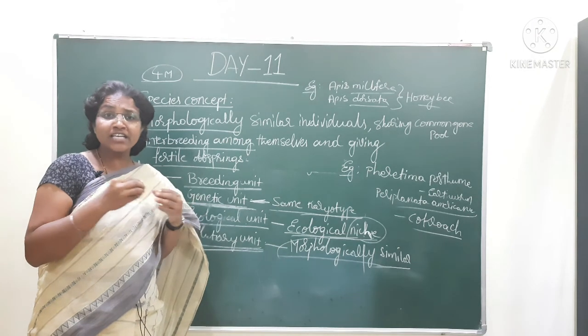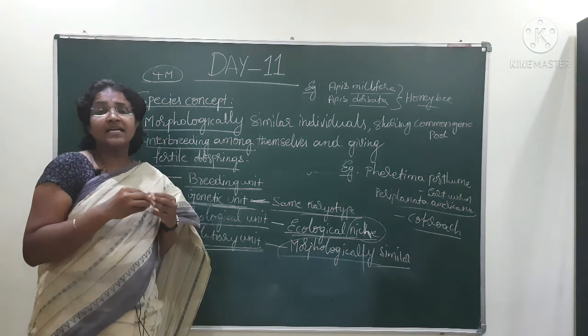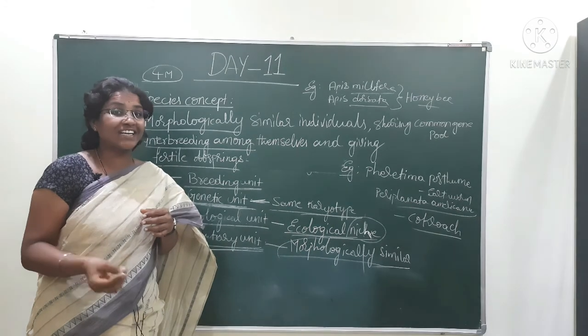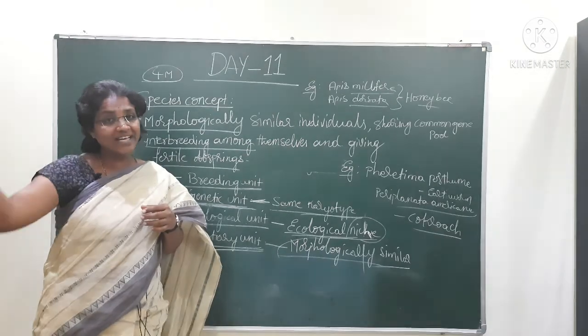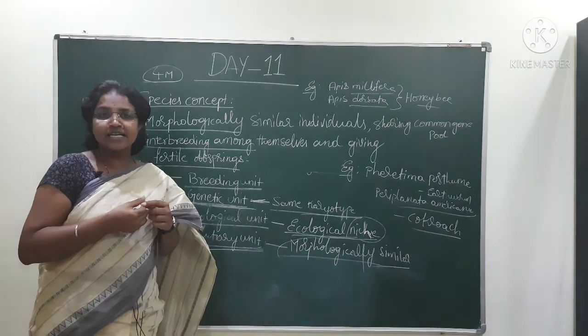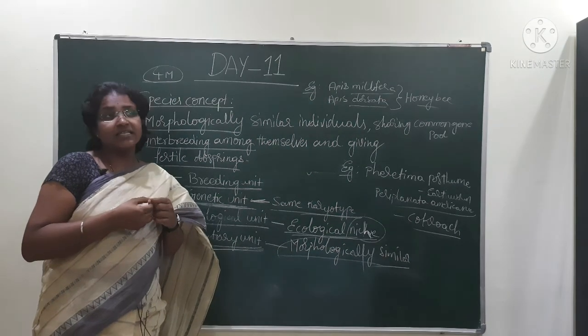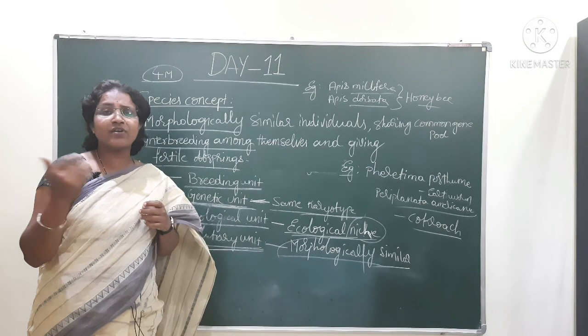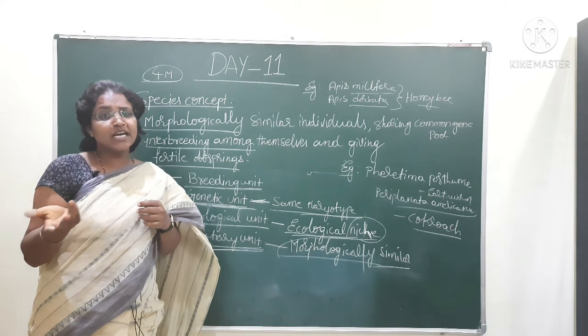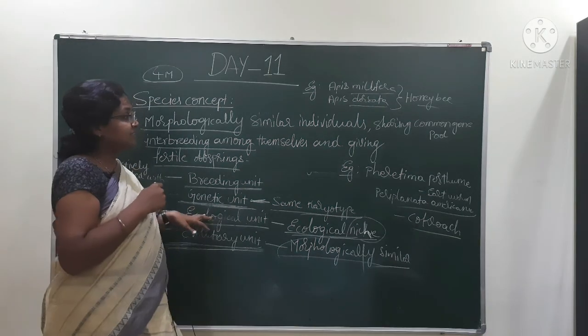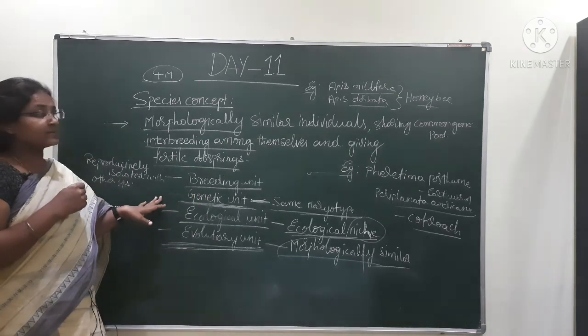Sometimes if related individuals interbreed, there will be formation of sterile offsprings. They are not fertile and cannot give birth to next generation. Horse and donkey - male horse with female donkey or female horse with male donkey - form a mule, which is sterile.